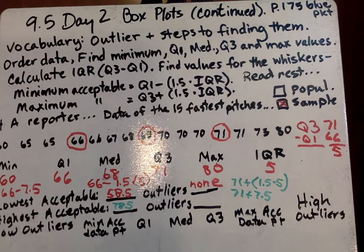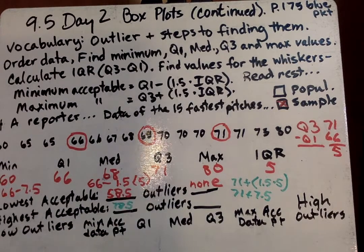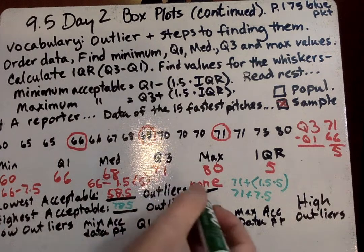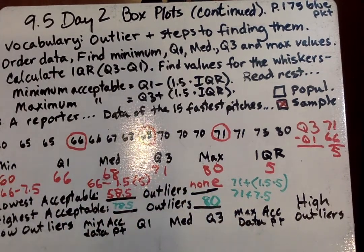Now we're going to go ahead and say our outliers is going to be 80.